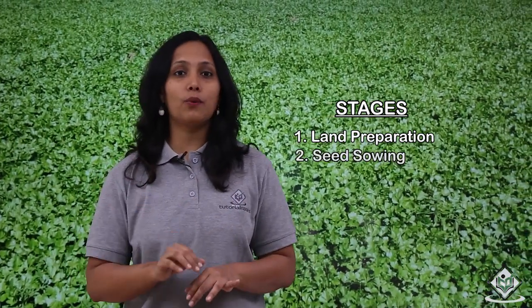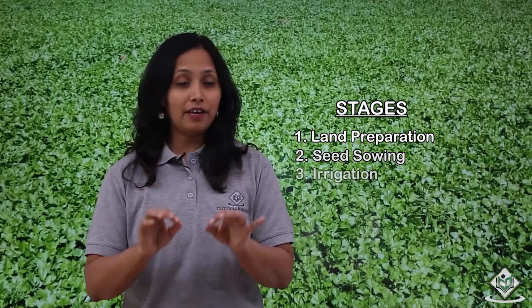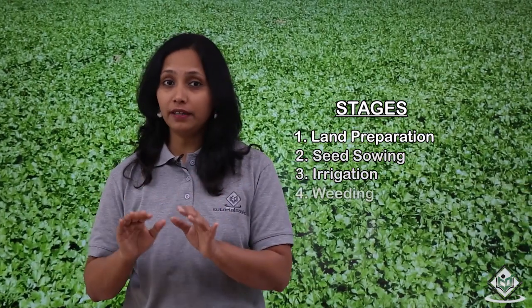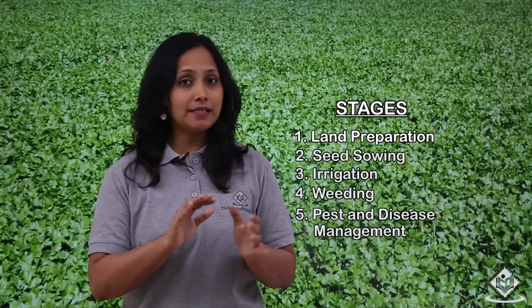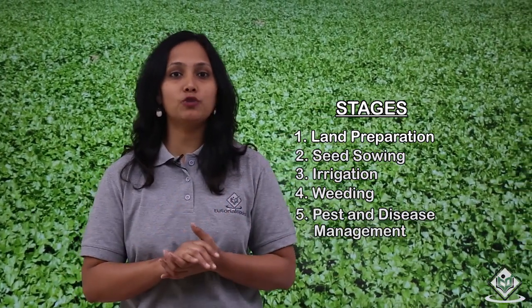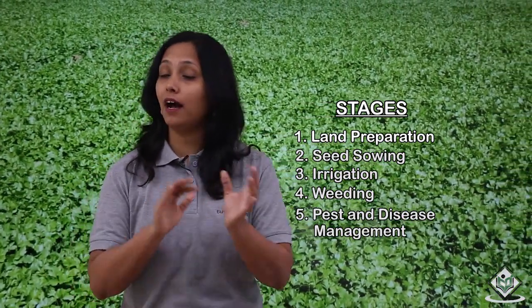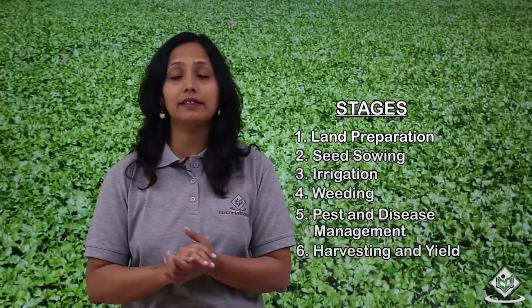Let us now see the stages involved in the cultivation of coriander. The stages are: land preparation, seed sowing, irrigation, weeding, pest and disease management, and harvesting and yield.